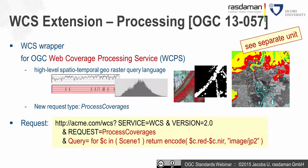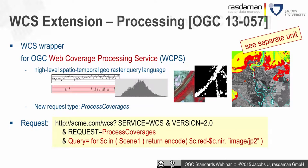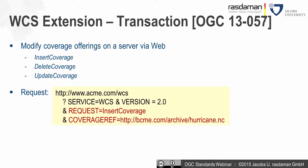The transaction extension allows modifying coverage offerings on the server via the web. It offers three new request types: InsertCoverage, DeleteCoverage, and UpdateCoverage. For InsertCoverage, you provide a reference URL to a file — for example a NetCDF file — the server resolves that URL, takes the coverage, and creates a new one in its service offering. There is a separate unit covering the requests and parameters in detail.